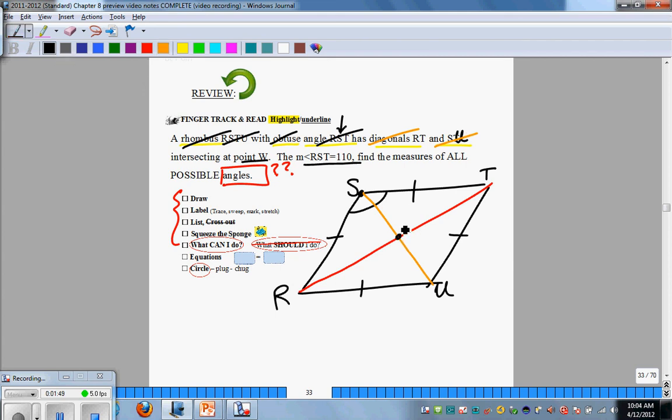The measure of RST is 110. Find the measure of all possible angles. I'd like you to stop the video and do the best you can to find all possible angles over the next minute, then restart the video when you think you're finished.